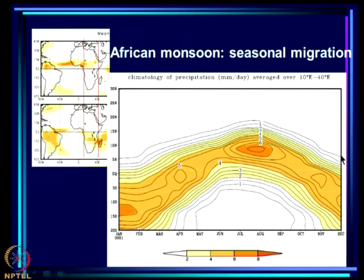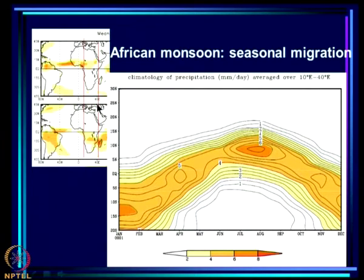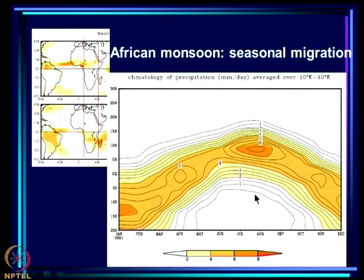Looking at Africa averaged from 10 to 40 degrees east and asking where the rain belt is: in January the rain belt is clearly in the southern hemisphere, and then it migrates to the northern hemisphere. This is a very classical picture of seasonal migration of the kind we have seen for the Indian monsoon—the African monsoon going from the southern hemisphere to the northern hemisphere.